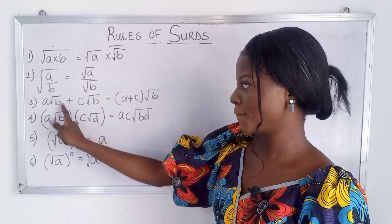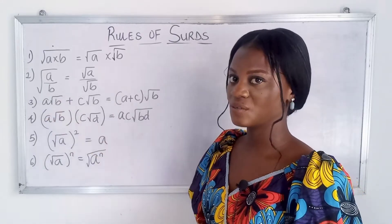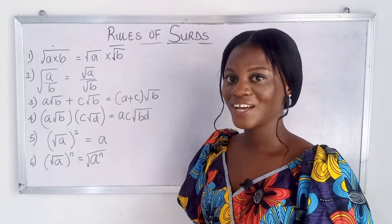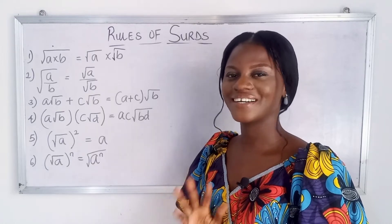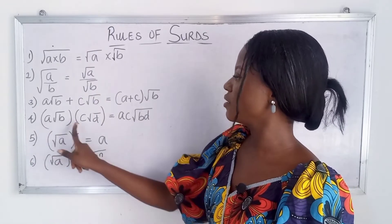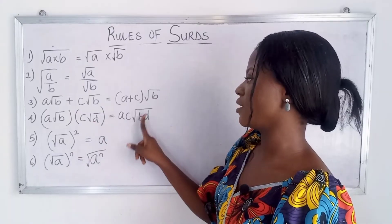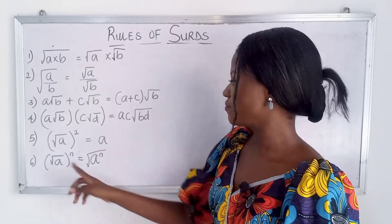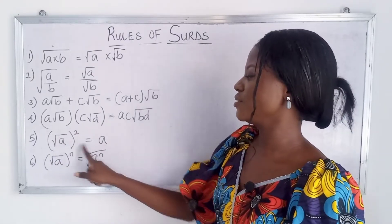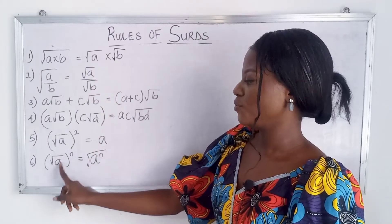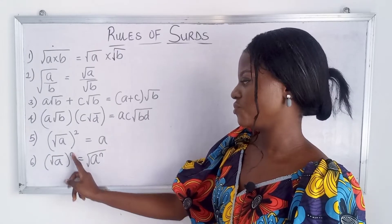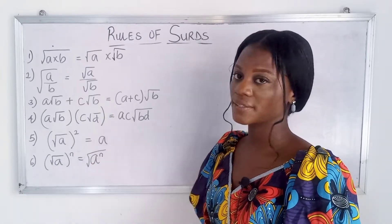The third rule says the radicands have to be the same — the values inside the roots. If you don't know the term 'radicand,' check our previous videos to catch up. Also, where you have a square cancelling the square root, it gives you the value. And for a case where you have roots to the power of something, you bring the power inside and put the root outside.